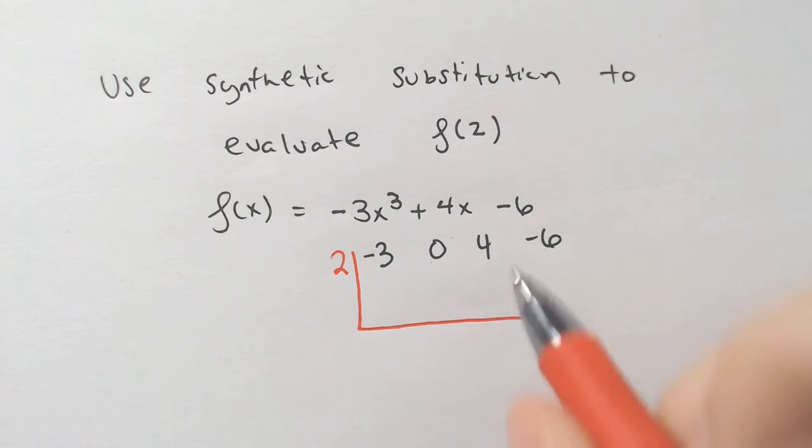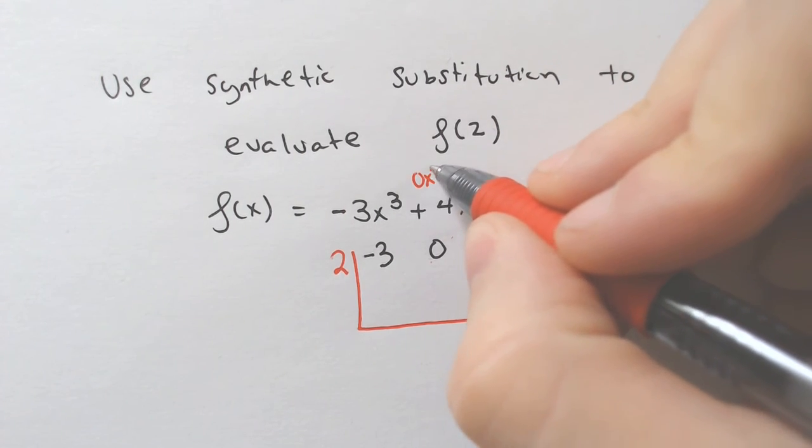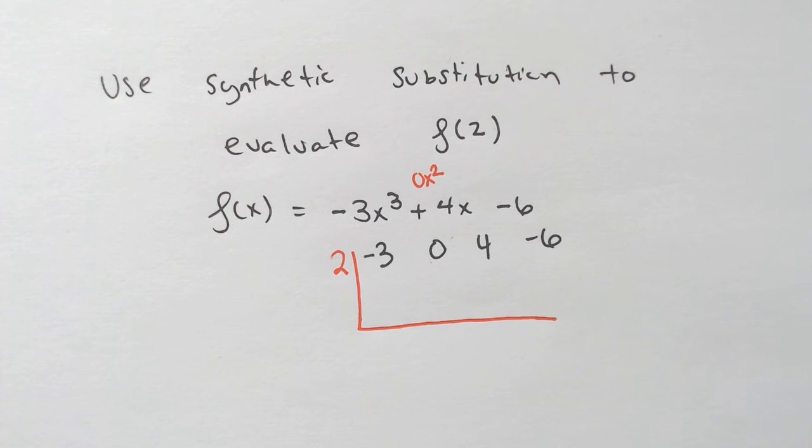And then you place these numbers here and do your synthetic division. Now, you may notice that I have a 0 here, and that is because there is a missing x-squared term. So that's what the 0 is there for. And you don't change the sign of the 2. It just stays a 2. And then you do your synthetic division.